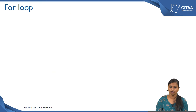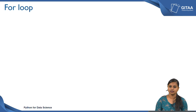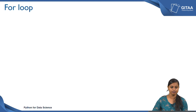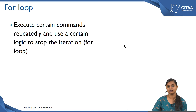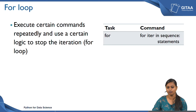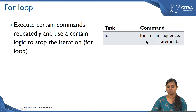Now we will look at the for loop. Whenever you want to execute certain commands repeatedly and use a certain logic to stop the iteration, you can use a for loop. The command is: for iter in sequence colon, followed by statements in the next line. This is the simple command used to construct a for loop.